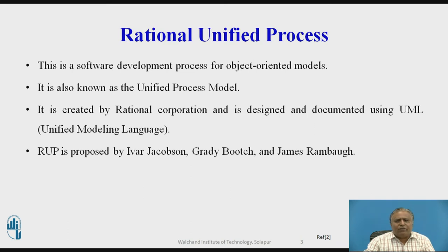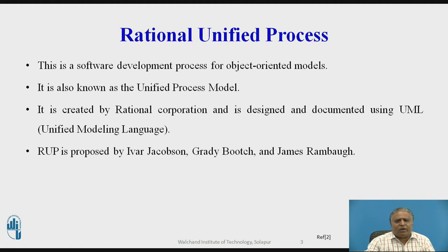First, we are going to see what is Rational Unified Process. This is a software development process for object-oriented model. It is also known as Unified Process Model. It is created by Rational Corporation and is designed and documented using UML, means Unified Modeling Language. Rational Unified Process is proposed by Ivar Jakobson, Grady Butch, and James Ramburg. This Rational Unified Process totally depends on object-oriented methodology.